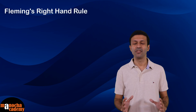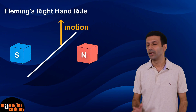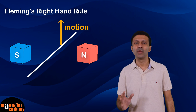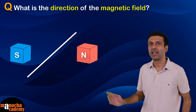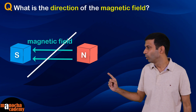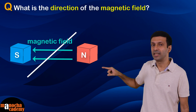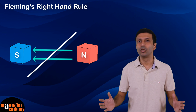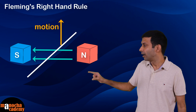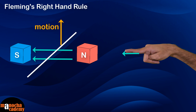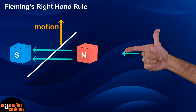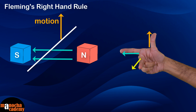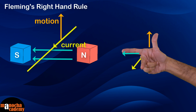Let's use Fleming's right-hand rule to find the direction of the induced current when a wire is in motion in a magnetic field. The magnetic field goes from the north pole to the south pole, so hold your forefinger along that direction. Since the wire is moving upwards, align your thumb upwards along the direction of motion. The center finger will automatically give you the direction of the current — in this case, the direction of the induced current is outwards along the wire.